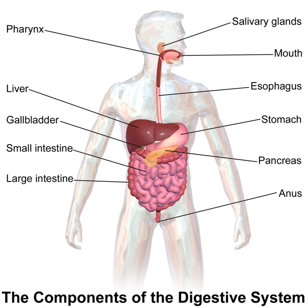The small intestine consists of the duodenum, jejunum and ileum. Inflammation of the small intestine is called enteritis, which if localized to just part is called duodenitis, jejunitis and ileitis, respectively. Peptic ulcers are also common in the duodenum. Chronic diseases of malabsorption may affect the small intestine, including the autoimmune coeliac disease, infective tropical sprue, and congenital or surgical short bowel syndrome. Other rarer diseases affecting the small intestine include Curling's ulcer, blind loop syndrome, Milroy disease and Whipple's disease.